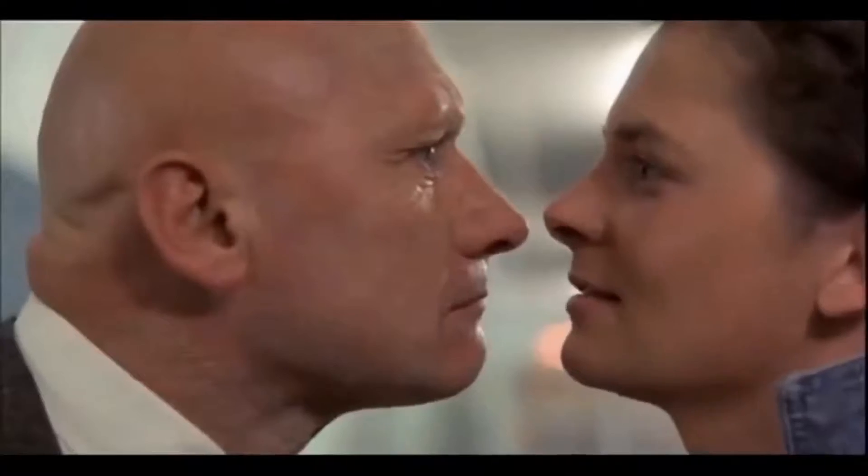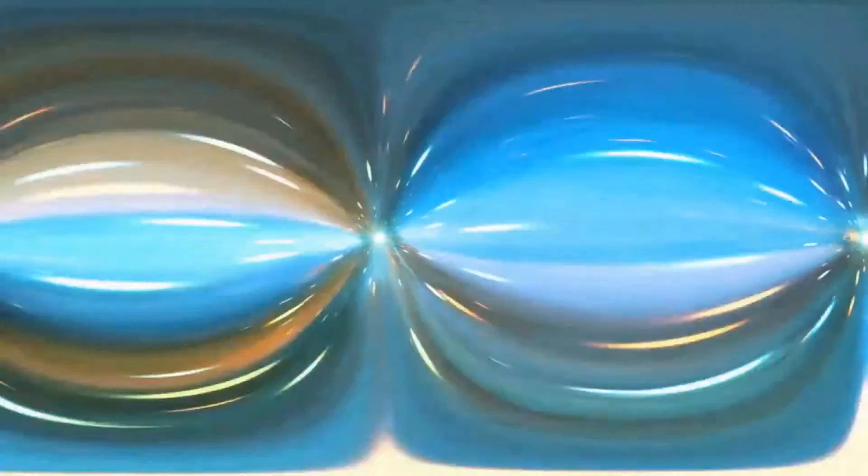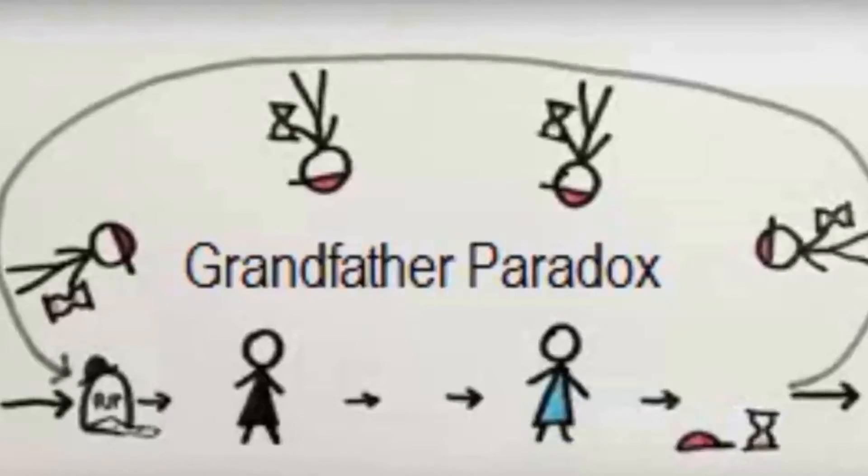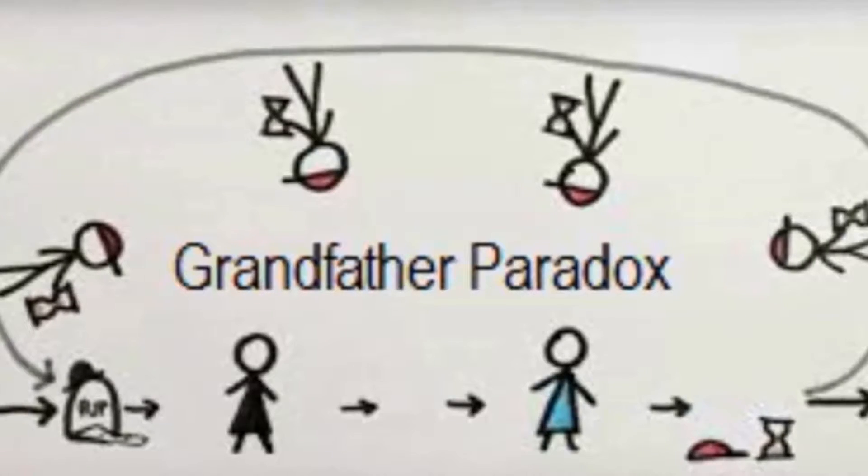In movies such as The Terminator, Donnie Darko, Back to the Future, and many others, we witness that moving around in time creates a lot of problems for the fundamental rules of the universe. If you go back in time to stop your parents from meeting, for instance, how can you possibly exist in order to go back in time in the first place? It's a monumental head-scratcher known as the grandfather paradox.